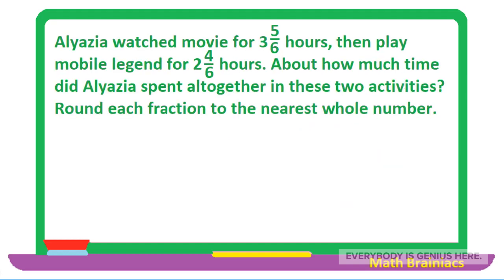Let us work on another example — a word problem. Aliasya watched a movie for 3 and 5 over 6 hours, then played Mobile Legends for 2 and 4 over 6 hours. About how much time did Aliasya spend in these two activities? Round each fraction to the nearest whole number. We are going to add 3 and 5 over 6 to 2 and 4 over 6.